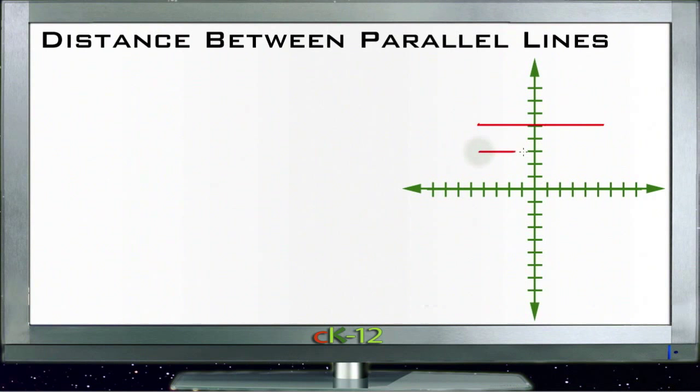If we have a couple of horizontal lines here, to find the distance between them all we need to do is figure out the y-value of any two points, one on each line, and then find the difference between those y-values.